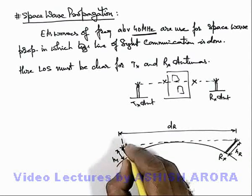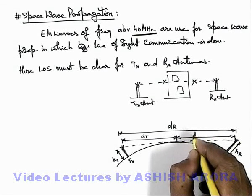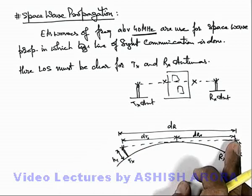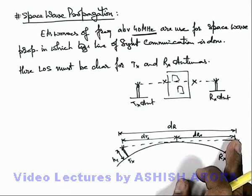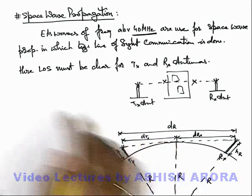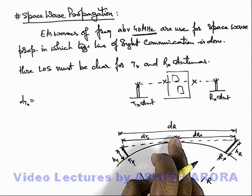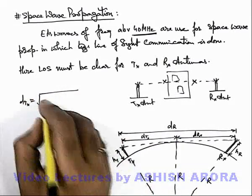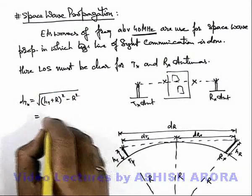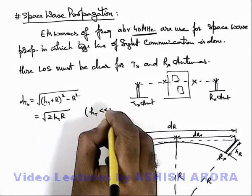The total range d-r can be considered as the sum of d-t-x and d-r-x, which is the distance from the tangential point from the transmitting antenna to the distance of the tangential point up to the receiving antenna. If the earth is considered to be a sphere of radius r, then we can calculate the value of d-t-x, which can be written as the square root of (h-t + r) squared minus r squared. On simplifying, this gives root of 2·h-t·r, since h-t is very small compared to the radius of earth.